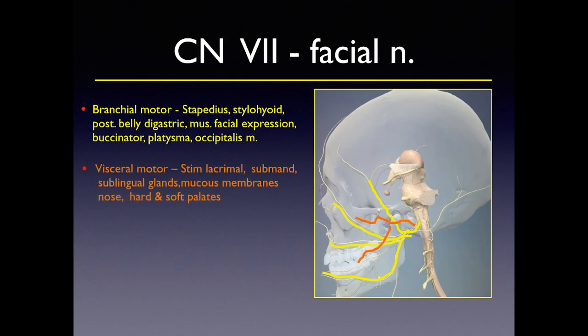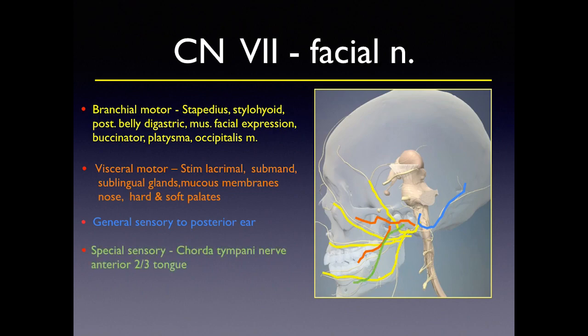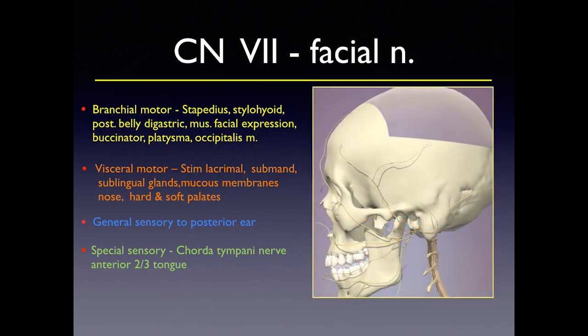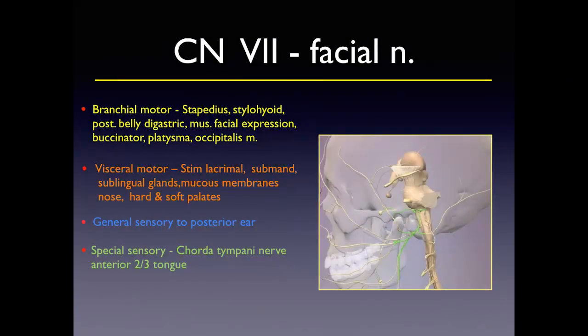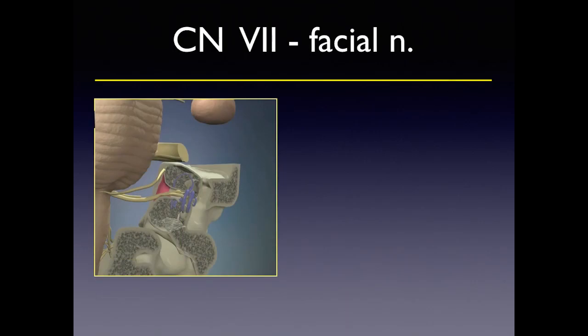The facial nerve also has visceral motor, which stimulates the lacrimal glands, submandibular and sublingual glands, and glandular tissue throughout the mucous membranes in the nose, palate, and soft palate. It has a little general sensory going to the posterior ear, and special sensory via the chorda tympani which innervates the anterior two-thirds of the tongue for taste. The nerve exits and is protected by the mastoid tip, then branches into five key branches in the parotid gland.